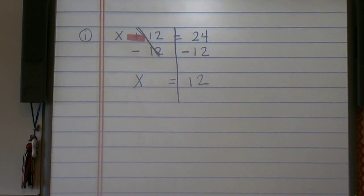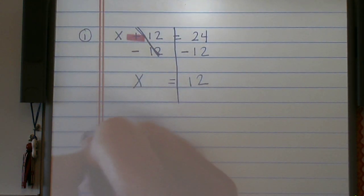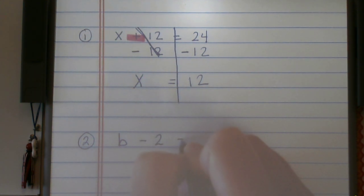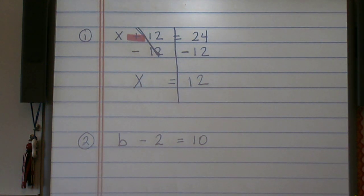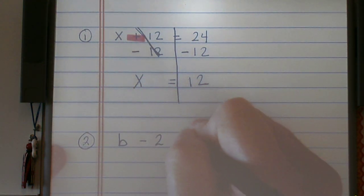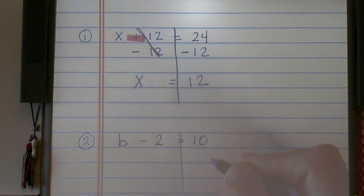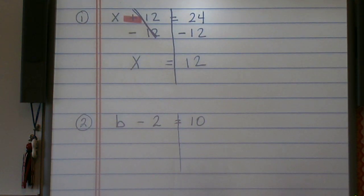Let's look at another example. B minus 2 equals 10. Again, I'm going to put a line down just so I can easily see the left of the equal sign and the right.